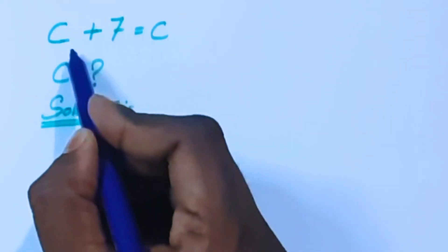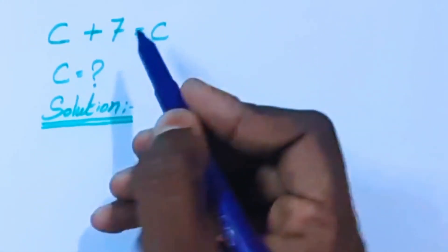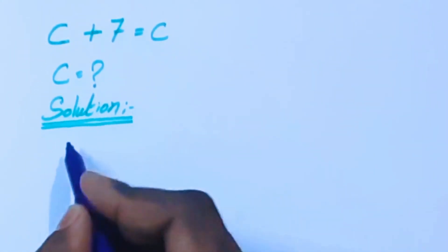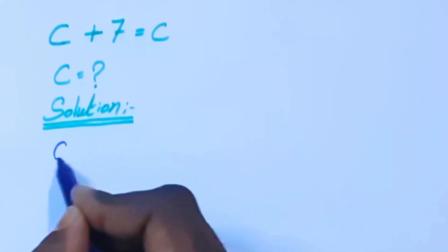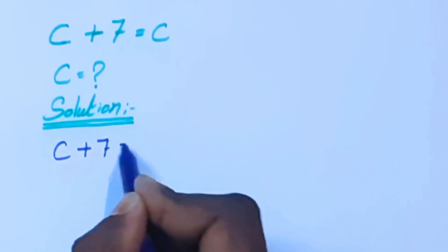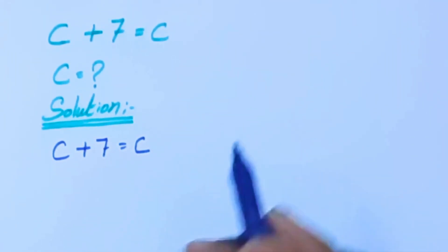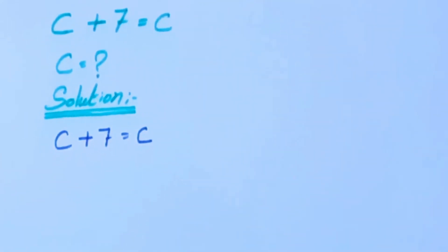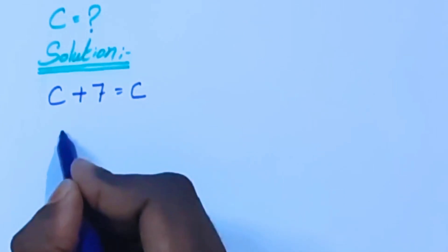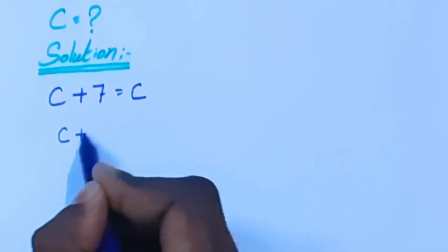Hello viewers, welcome to the channel. Today we are going to solve this problem: find the c value. The equation is √(c + 7) = c. Now we are going to take a square on both sides.